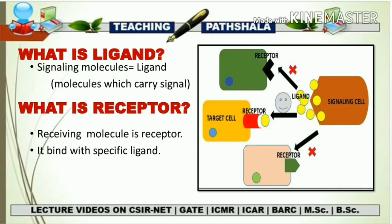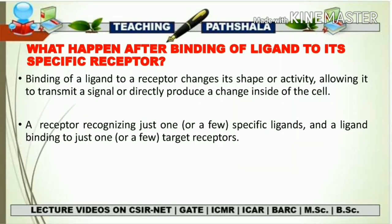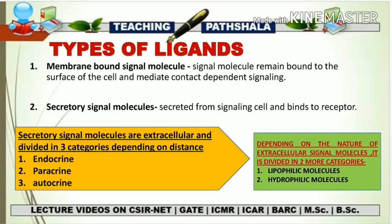That is what is called the specificity of receptor and ligand. It is not compulsory that the structure or conformation of the receptor will always decide the specificity — it may be amino acid composition, protein nature, or anything else. Specificity is always present between the ligand and receptor interaction. After ligand-receptor binding, there is a conformational change inside the receptor, and that is what produces signaling inside the cell. A receptor recognizes just one or a few specific ligands, and a ligand binds to just one or a few target receptors.